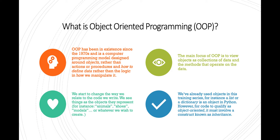OOP has been in existence since the 70s, and it's a computer programming model designed around objects rather than actions or procedures, and how to define data rather than the logic in how we manipulate it, which is largely what we've seen so far in this class. The main focus of object-oriented programming is to view objects as collections of data and the methods that operate on the data. We start to change the way we relate to the code we write — we see things as the objects they represent, for instance, animals or shoes or models, or whatever we wish to create.